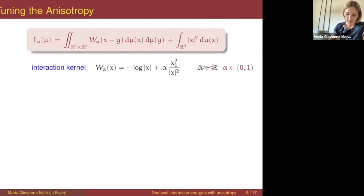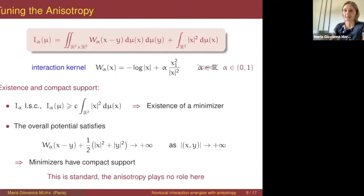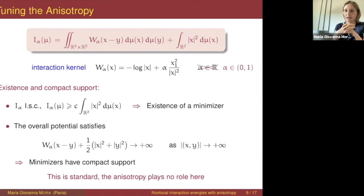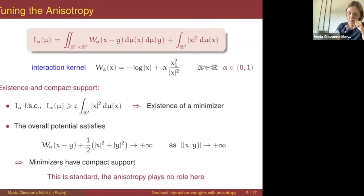For existence of a minimizer and compact support, we can apply the general standard theory of non-local interaction problems — the anisotropy is not really relevant here. For existence, we apply the direct method of the calculus of variations, and to prove that minimizers are compactly supported, this basically comes from the confinement that prevails at infinity.